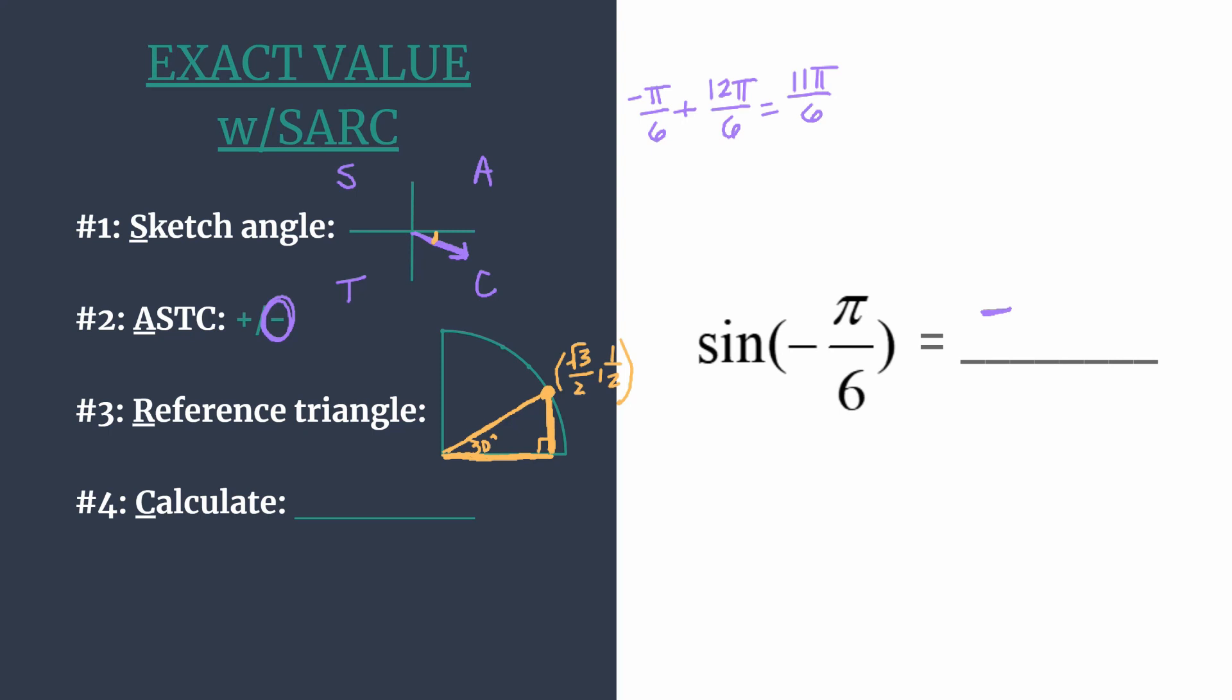And now we're ready to calculate our exact value. So we know on the unit circle the sine of our angle is simply going to be the y coordinate and that's because our hypotenuse is 1 on a unit circle.